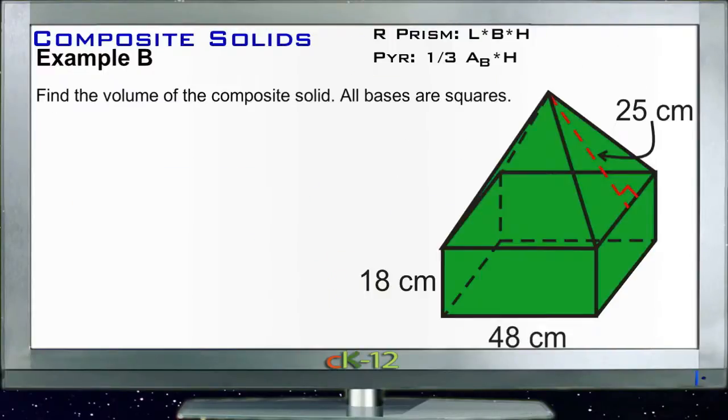All right. Example B. Find the volume of the composite solid. All the bases are squares. So we have two shapes here. We have a rectangular box, so a rectangular prism, and then we have a pyramid sitting on top of it.